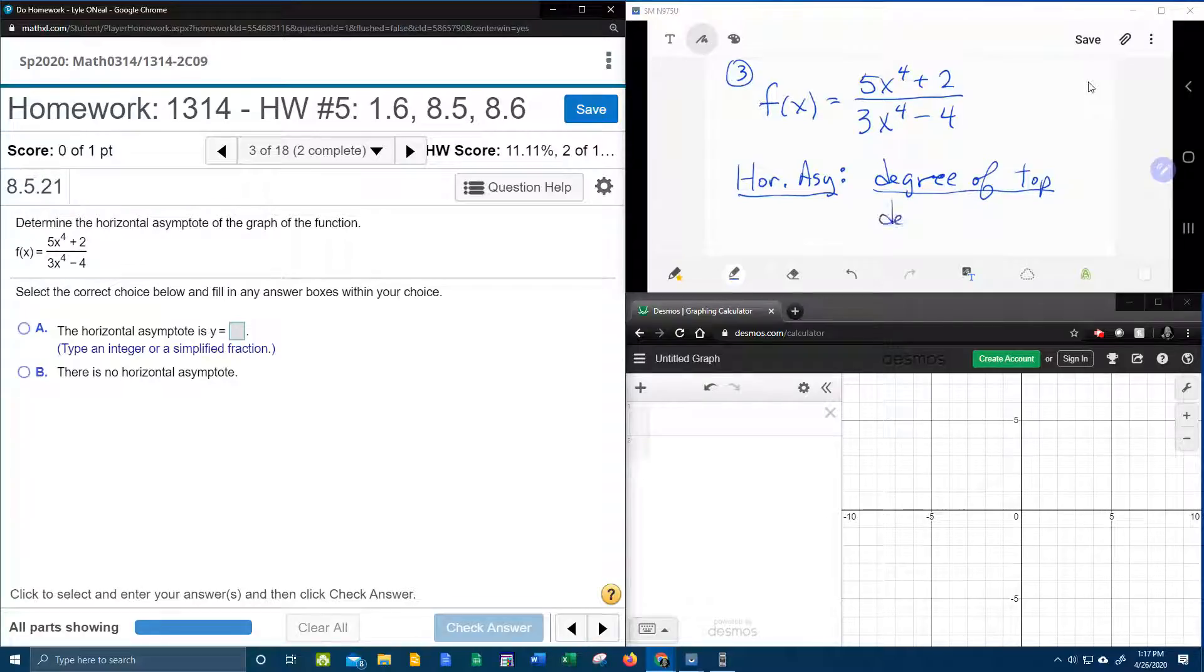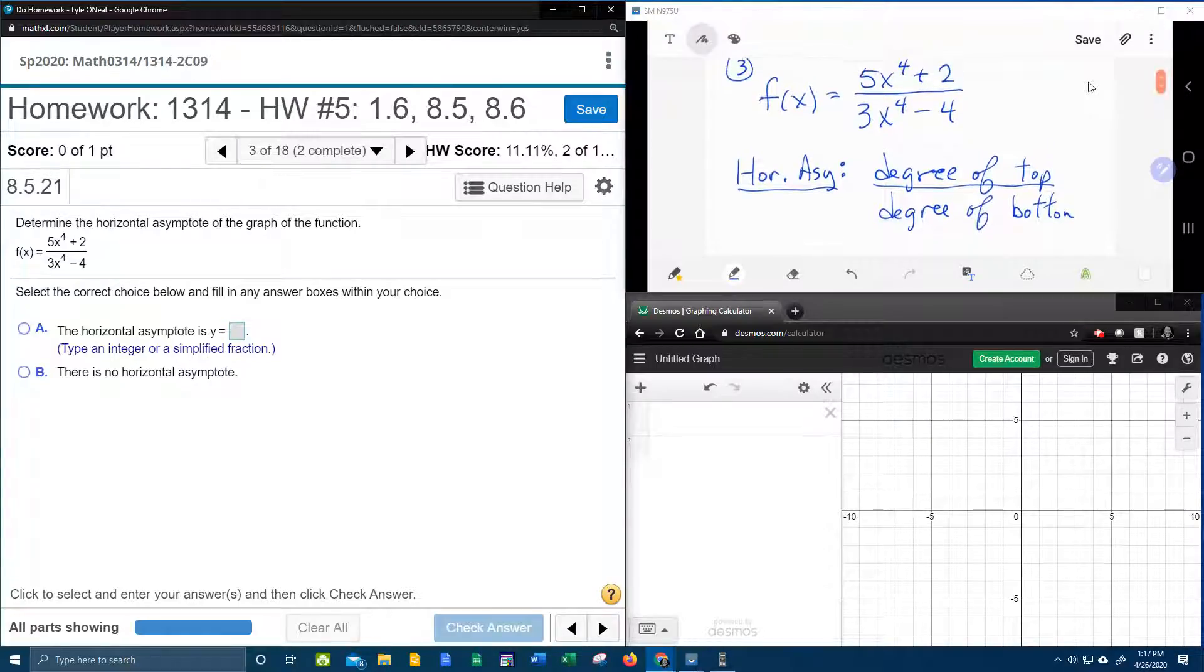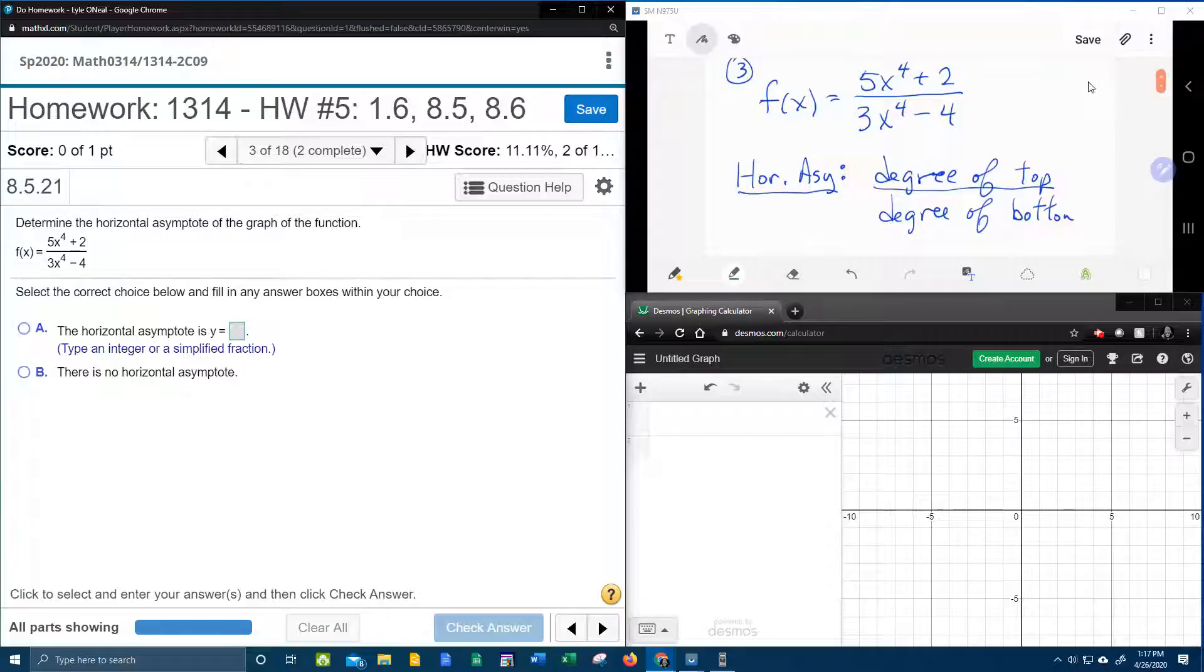with the degree of the denominator, I'm going to call that the bottom. So you have to compare the degree of the top with the degree of the bottom. Now the degree is the biggest exponent on any variable.